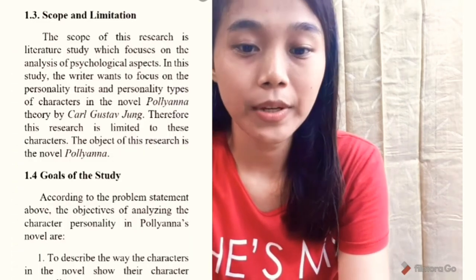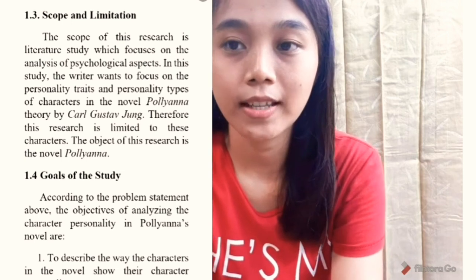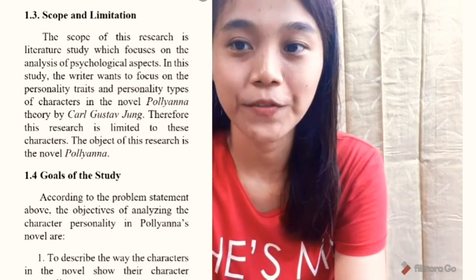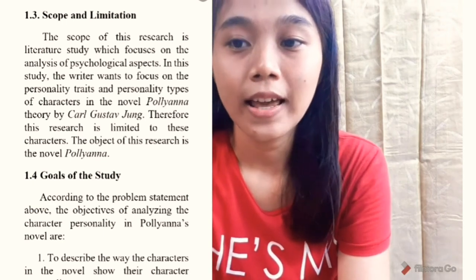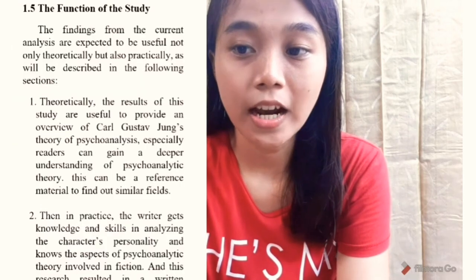Next, scope and limitation. This research is a literature study which focuses on the analysis of the psychological aspect. Next, goals of the study are to describe the way the characters in the novel show their character personality, and to find the type of character personality in the novel according to Jung's theory. The function of the study is to provide an overview of Jung's theory and to gain knowledge and skill in analyzing. Lastly, the systematic presentation is divided into three chapters, each with different sections.